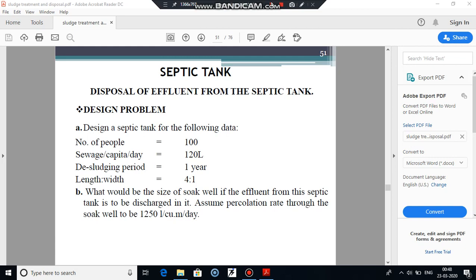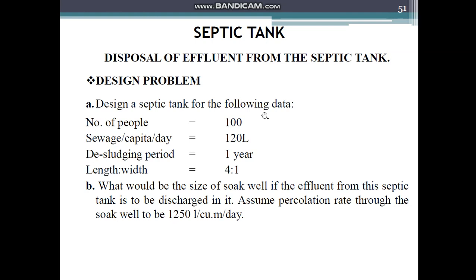The first numerical says: design a septic tank for the following data. Number of people is 100, sewage generated per capita per day is 120 liters, desludging period (the cleaning period) is one year, and the length to width ratio is 4:1. Also, what will be the size of the soak well if the effluent from this septic tank is to be discharged into it? Assume a percolation rate through the soak well of 1250 liters per meter cube per day.